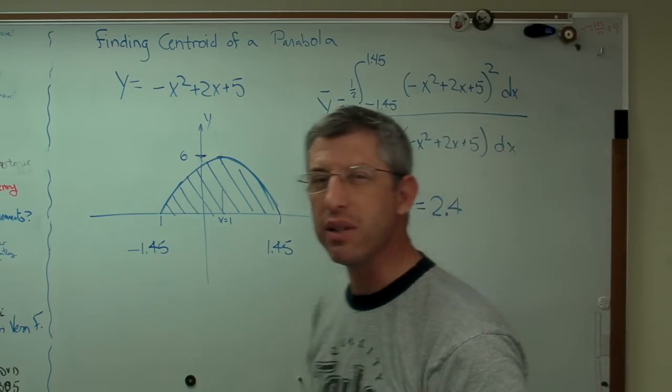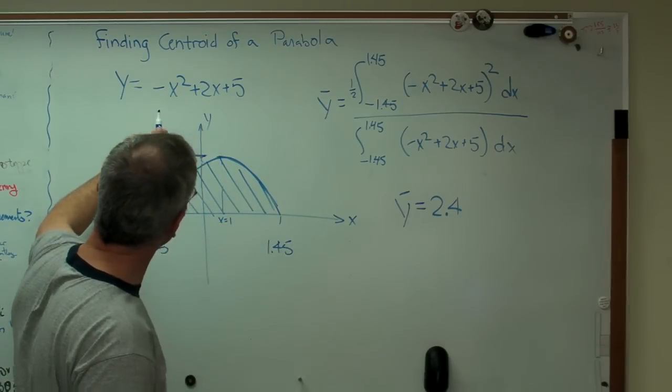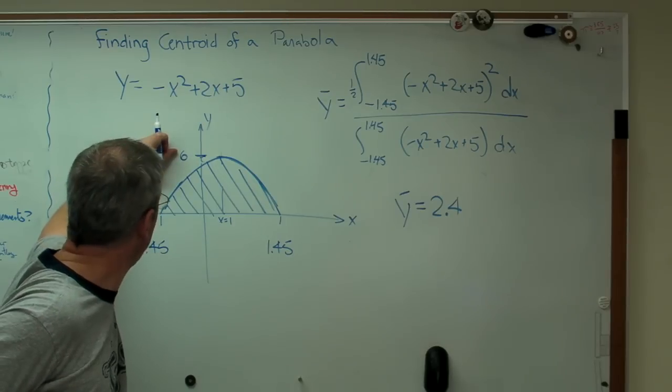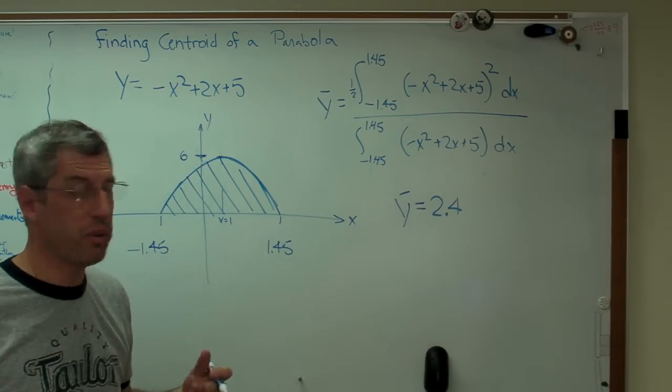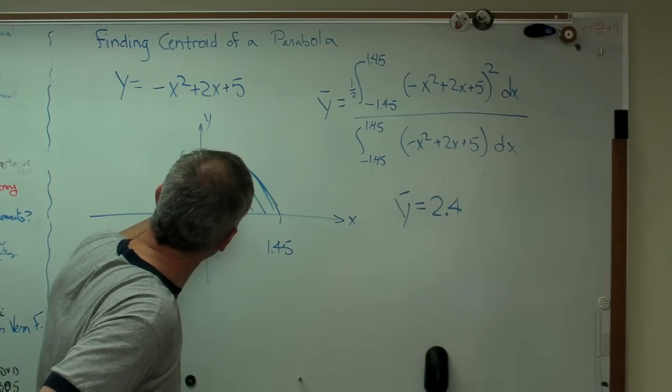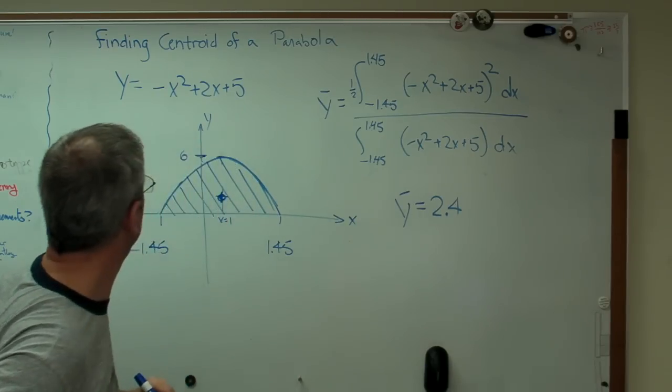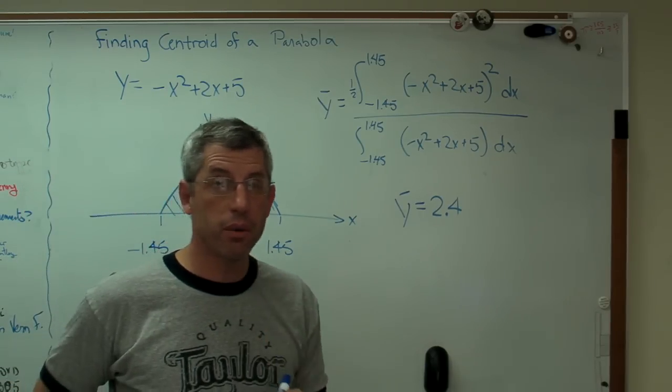Now, let's see if that makes at least qualitative sense. It makes sense that the centroid ought to be below half that height, below 3. 2.4 would be down there somewhere. That looks plausible. Now, to double-check,